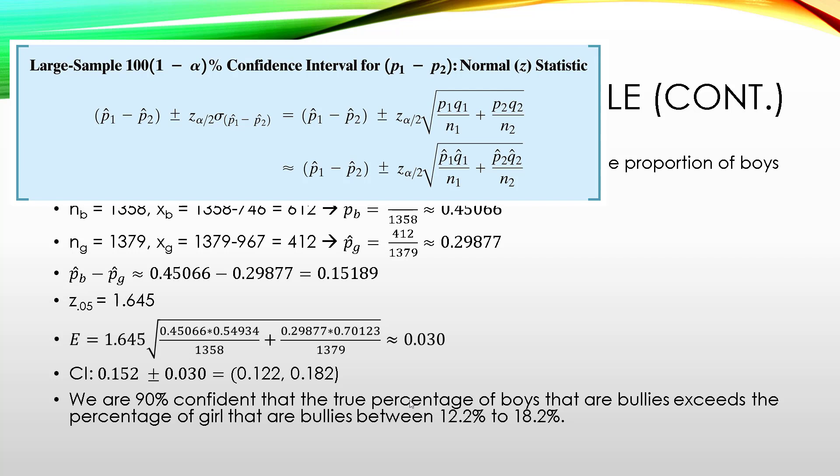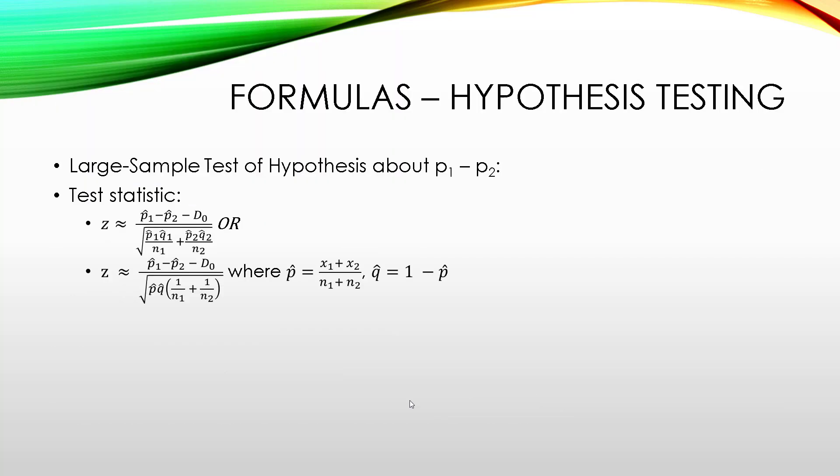We could have also done this as a hypothesis test. Just to show you the formulas, it's very similar. We can do a large sample test of hypothesis about p₁ minus p₂. Our test statistic is z, so it's the difference in sample proportions minus what our hypothesized difference is, over the standard error, which is the same standard error you would have calculated in the first part. You can actually combine them if you wanted to into a single p̂ and q̂. You're going to wind up with very similar results if you do this, and so it doesn't truly matter either way.